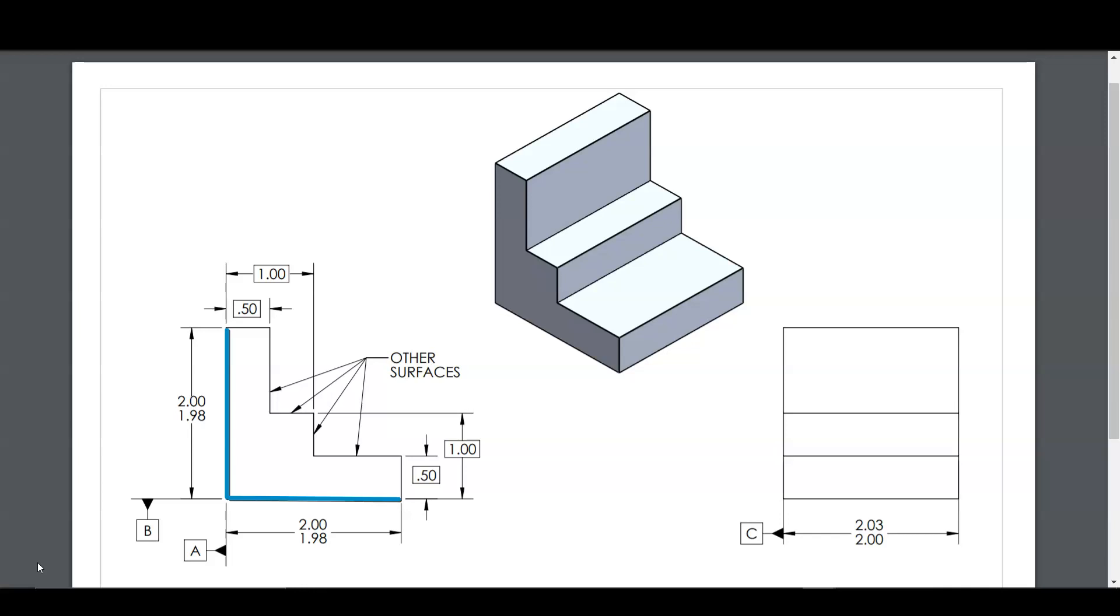The bottommost surface, denoted by datum feature B, and the 2 inch width, denoted by datum feature C.